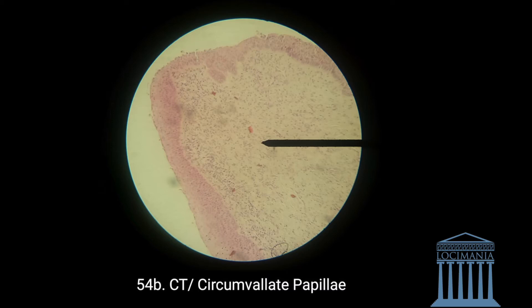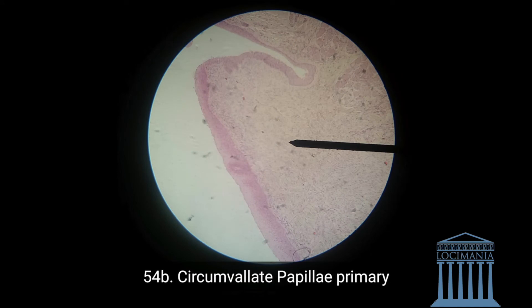This is the primary circumvallate papillae — I'm going to speak about the secondary circumvallate papillae soon. All of that structure is called circumvallate papillae. The full strawberry is called circumvallate papillae. Here we have the primary circumvallate papillae, and now we're going to have the secondary papillae by invagination.